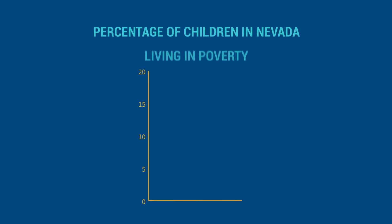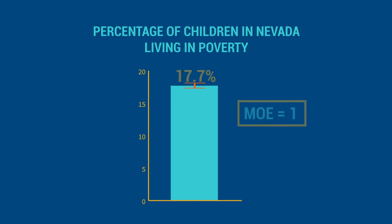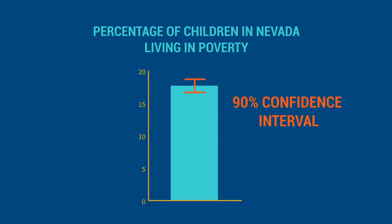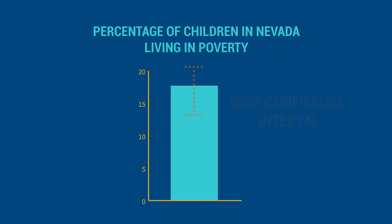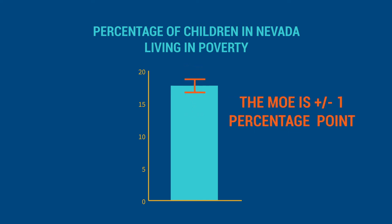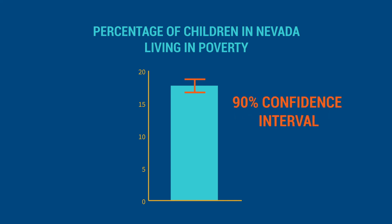For example, data from the 2018 ACS one-year estimates indicate that 17.7% of children in Nevada are living in poverty. The corresponding MOE is 1. Calculate the 90% confidence interval by adding and subtracting the MOE from the estimate. A large MOE, and thus a wide confidence interval, indicates that the estimate contains a lot of uncertainty. In this example, the MOE is plus or minus 1 percentage point, meaning we can be 90% confident that the rate of child poverty in Nevada falls between 16.7% and 18.7%.